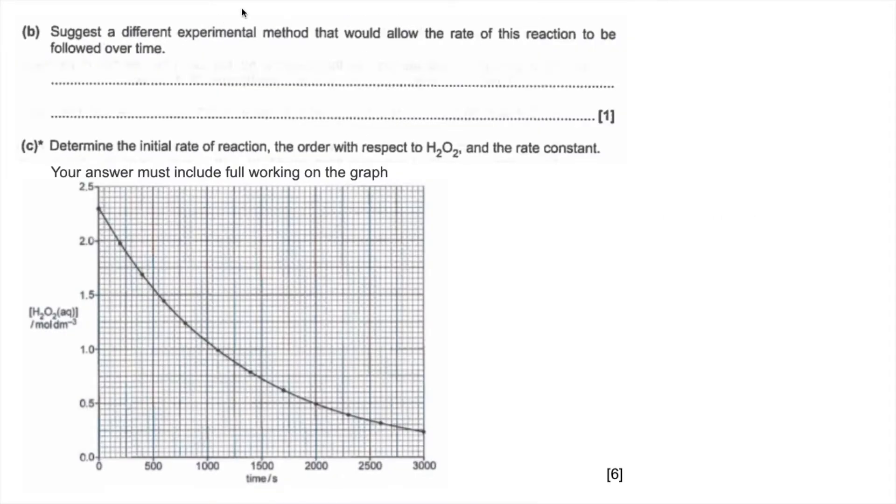Suggest a different experimental method that would allow the rate to be followed over time. Because the reaction produces a gas you could monitor the mass of the flask or the reaction vessel over time. So you'd monitor the mass lost by the reaction by recording the mass of the flask at regular intervals.